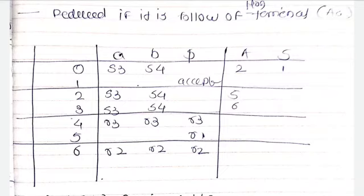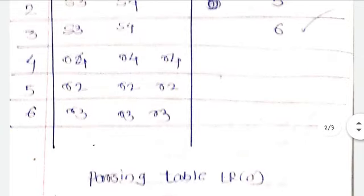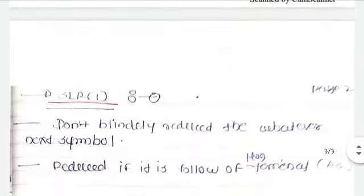Now state number 5. The follow of the given symbol is dollar. That's why we are writing R1 into the dollar only. But here we write R2, R2, R2 into the column of A, B and dollar.